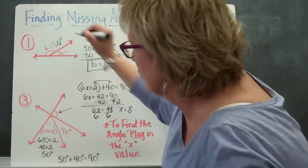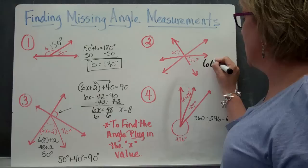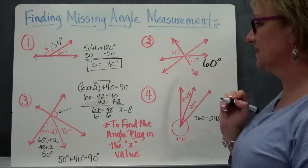For number two, I know that these two are going to be right across from each other, and like we said with vertical angles, anything that is vertical is going to have the same angle measurement. So B will also be 60 degrees.